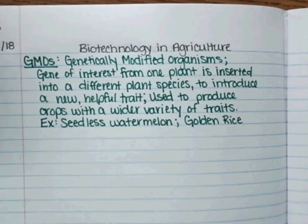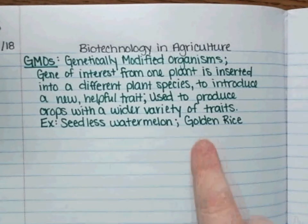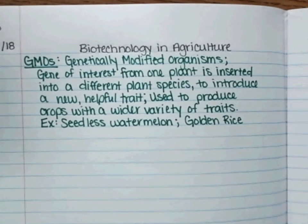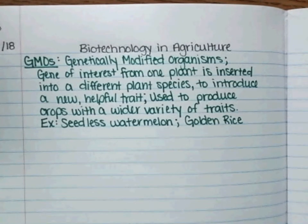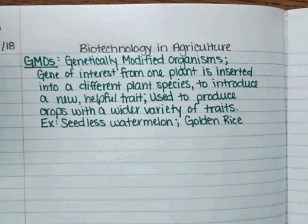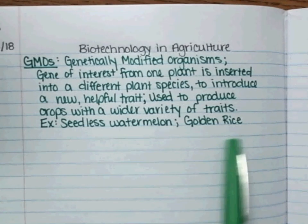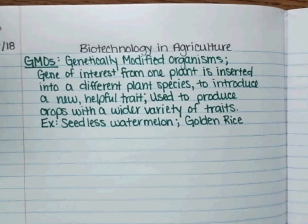Golden rice is named for the gene inserted into the rice to create beta carotene. Beta carotene is a vitamin found in things like carrots that gives them their orange or golden color. Beta carotene is used by your body to produce vitamin A, which is one of those essential vitamins that not everyone gets enough of, especially if you're malnourished. Golden rice was an opportunity to take a not very nutritious food and make it more nutritious and more valuable in areas where rice is really popular.